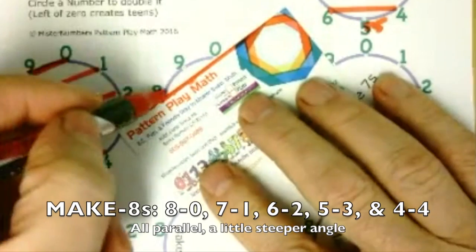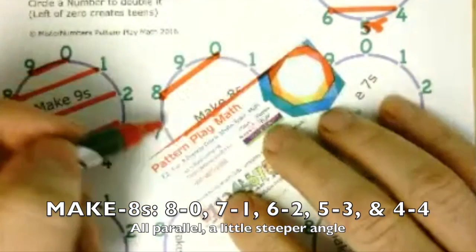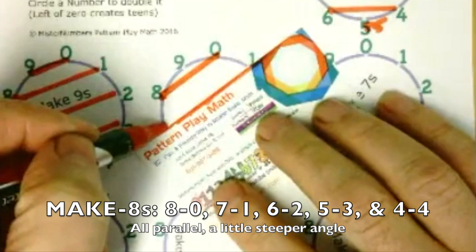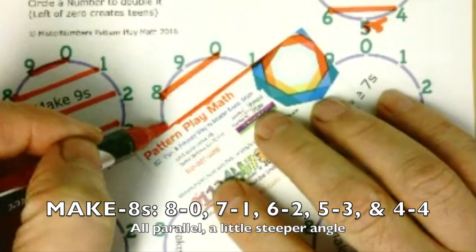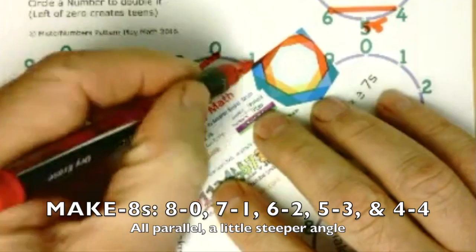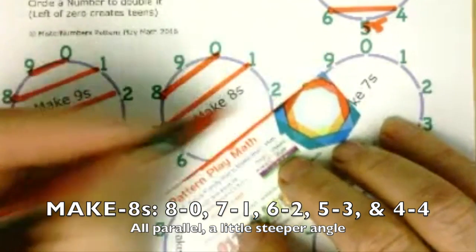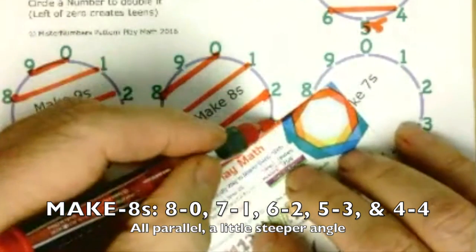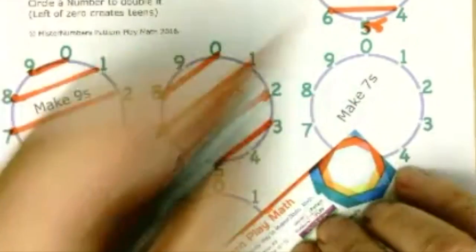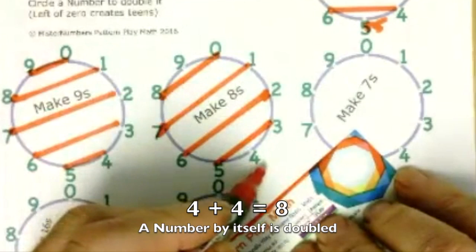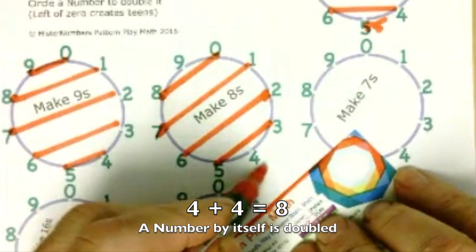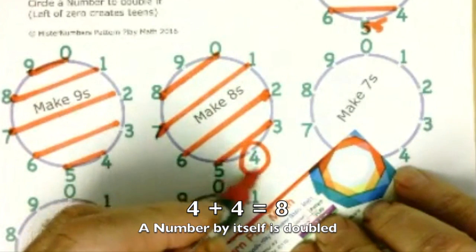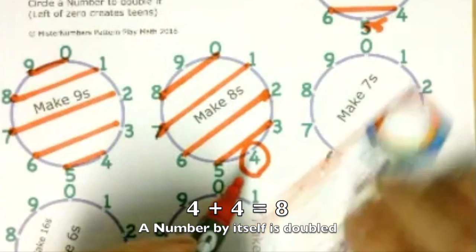And let's just do the 8s. We'll work our way down. So 0 and 8. Now we're just going to go down to the left, to the right of 0, and 7 and 1, 2 and 6, and 3 and 5. And like 10, we have a number all by itself, 4, and we're making 8s. 4 and 4 make 8. It's really cool.